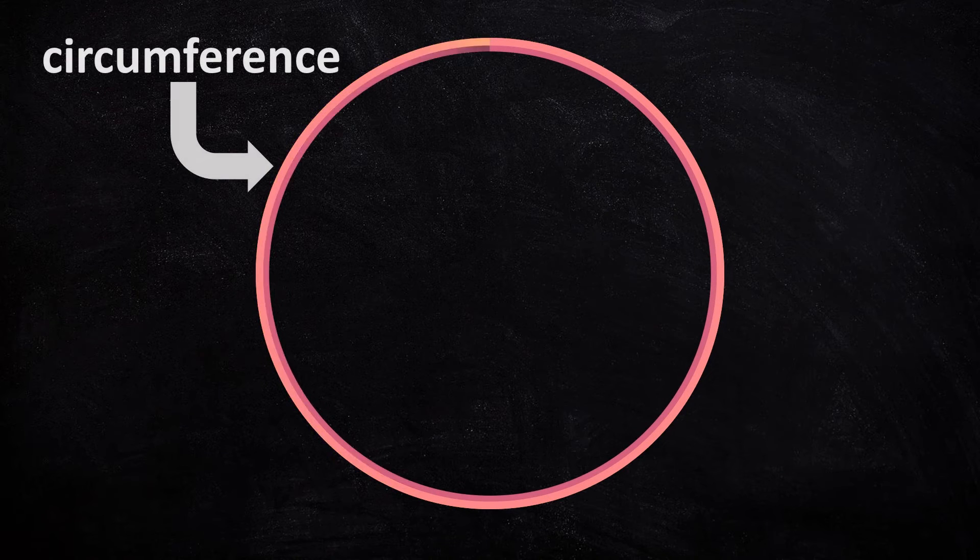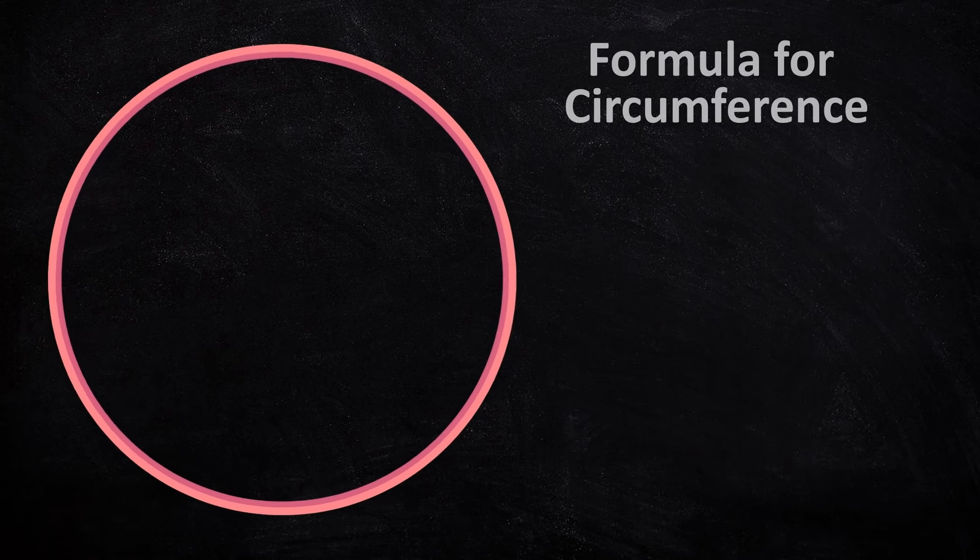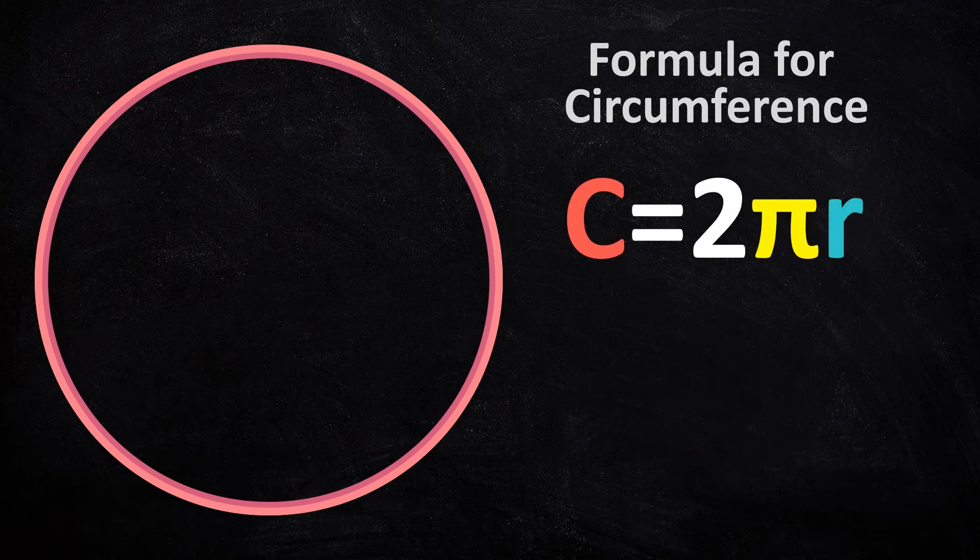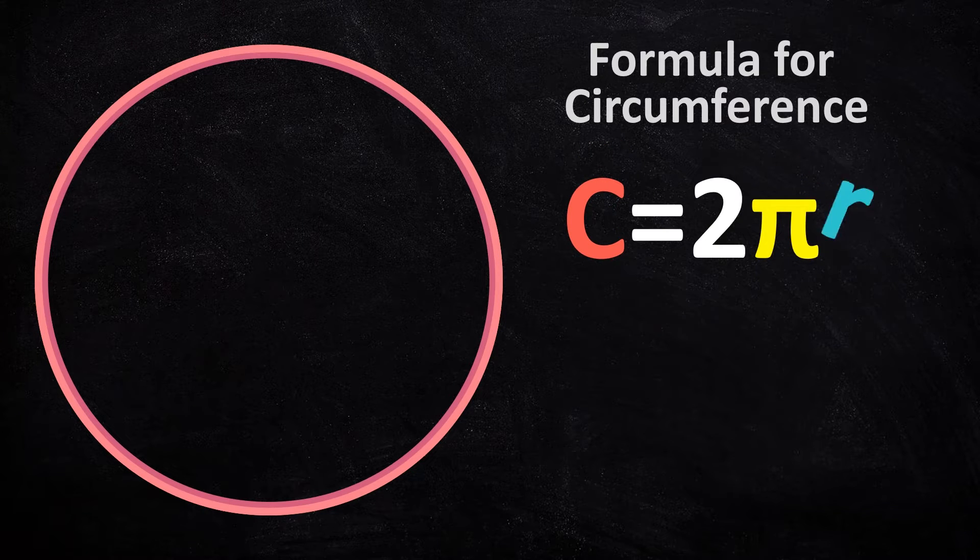The circumference of a circle is very easy to calculate as long as you know this formula. C equals 2 pi r.